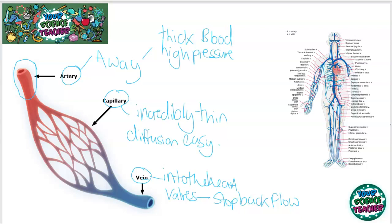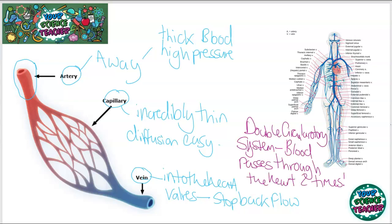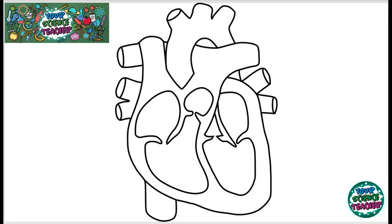In humans we have what's called a double circulatory system. This means that blood enters the heart twice — it goes through the heart and then goes to the lungs where it becomes oxygenated, then goes back to the heart to be pumped around the body. The heart plays a massive role in the double circulatory system as it takes the blood and sends it to the lungs to become oxygenated and then takes it back to send it around the body.